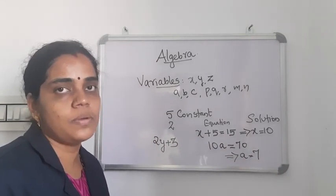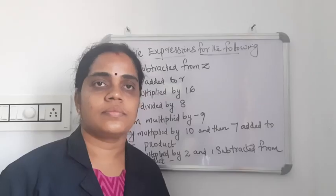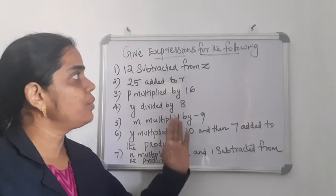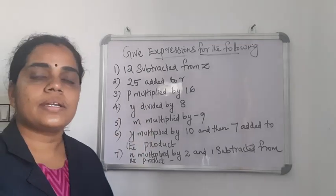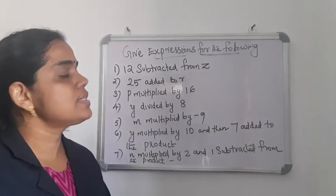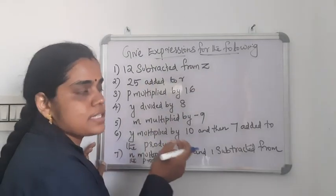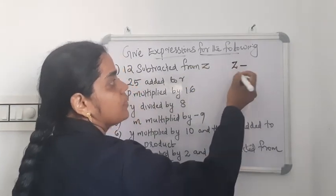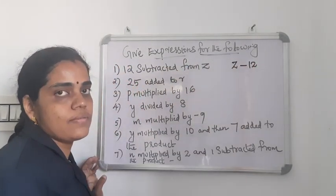Now we can do some problems. Some statements are given and we need to convert each statement into an expression. First statement: 12 subtracted from Z. The operation is subtraction, the variable is Z and the constant is 12. How to write this as an expression? 12 subtracted from Z — from Z, so we write Z first, then subtract 12. It is Z minus 12.